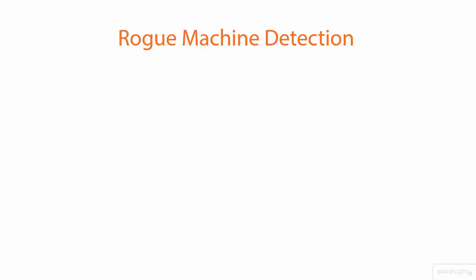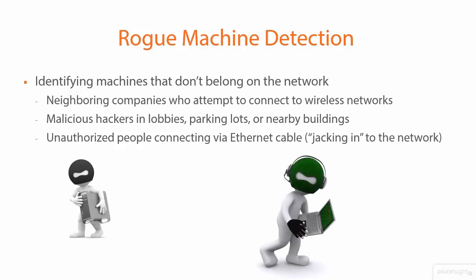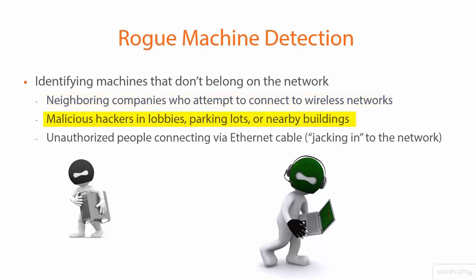Next we have rogue machine detection. With rogue machine detection we basically want to make sure we identify people that don't belong on our network. That could be a neighboring company — perhaps we have a company sitting next to us in an office building — we want to make sure those people don't access our wireless networks. We also want to make sure malicious hackers, perhaps in a lobby or a parking lot or a nearby building — remember we talked about cantenas and specialized pieces of equipment that can give people extended ranges on their wireless networks.